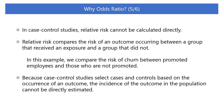In such case-control studies, relative risk cannot be calculated directly. Therefore, odds ratios are generally used in case-control studies as a measure for comparison. Relative risk compares the risk of an outcome occurring between a group that received an exposure and a group that did not. In this example, we compare the risk of churn between promoted employees and those who are not promoted.